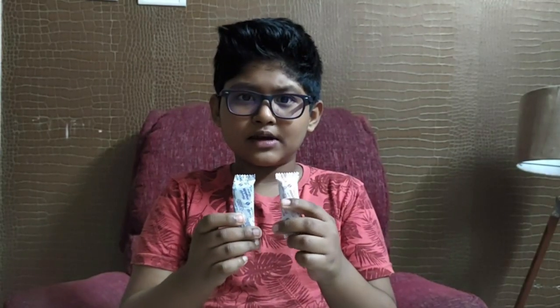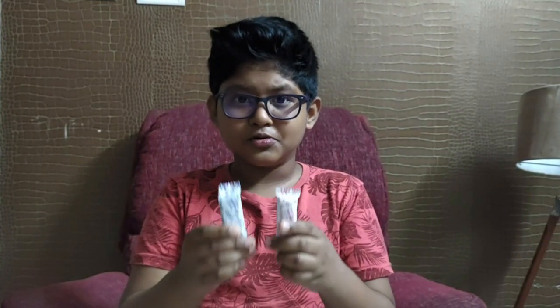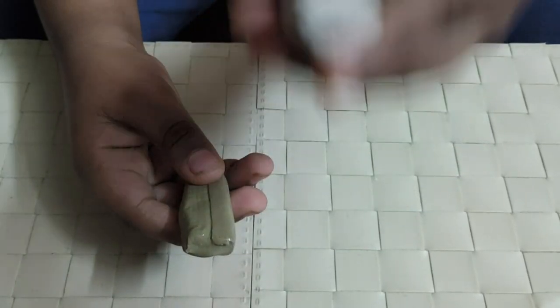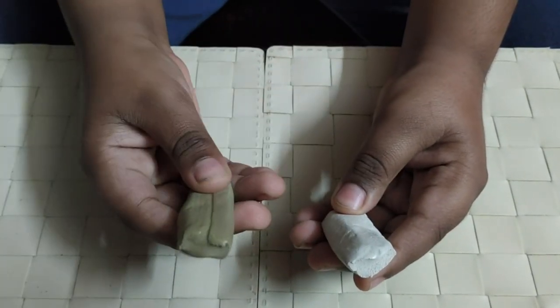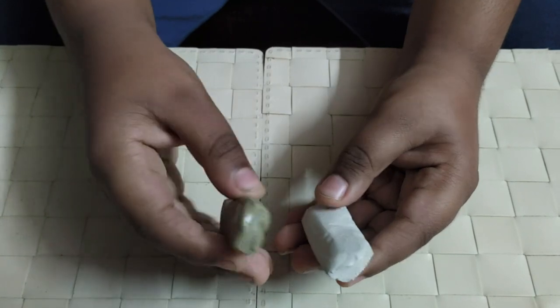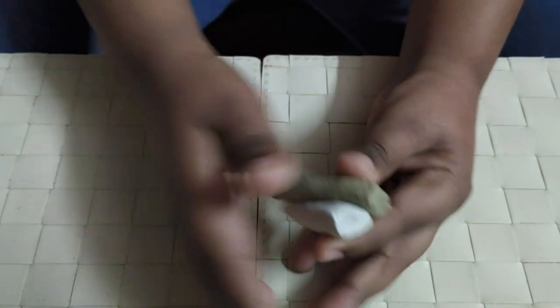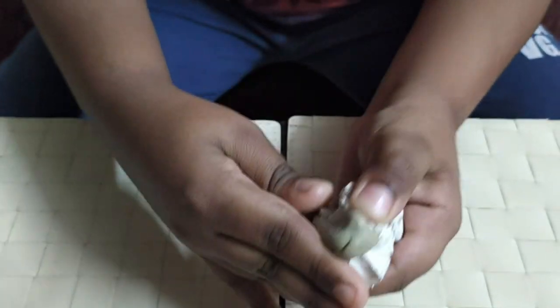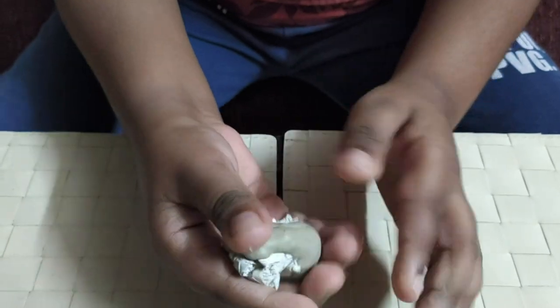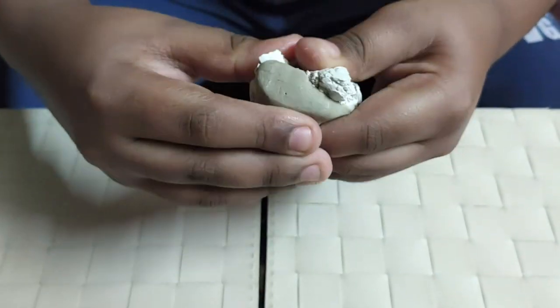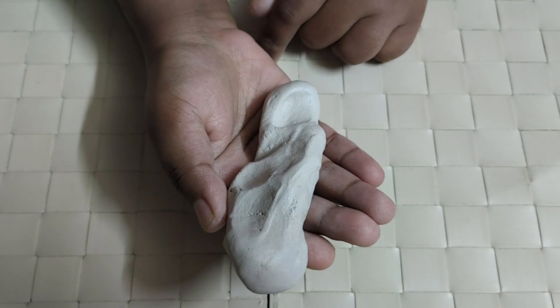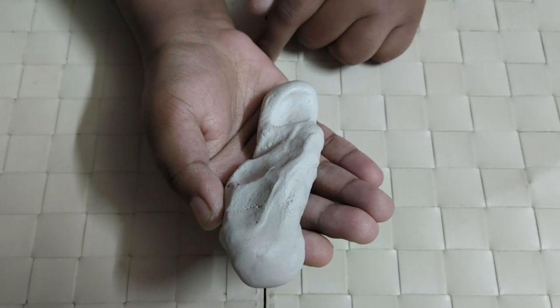Now I am going to make the border of the clock using molded clay. One is the resin and one is the hardener. We have to mix it together to make it into a clay. This is how the clay looks after mixing.